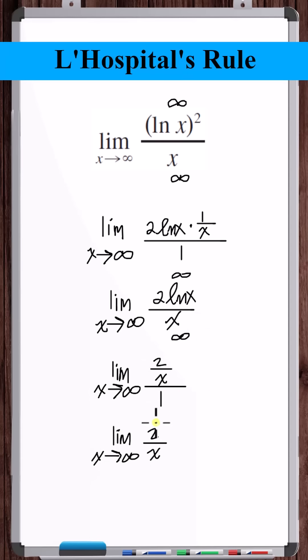The limit as x goes to infinity of 2 over x is equal to 0. So this limit is equal to 0.